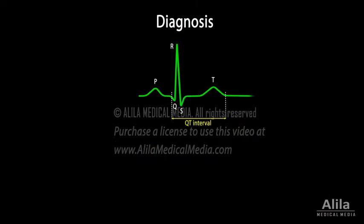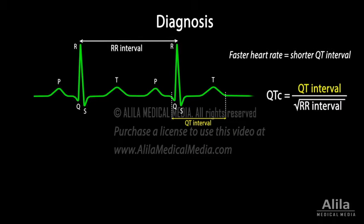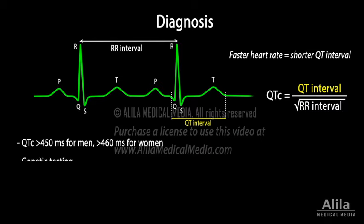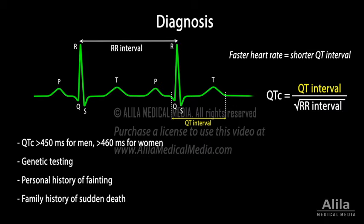For diagnosis, the patient's QT interval is measured. Because QT interval varies with heart rate, a corrected QT interval is calculated after measurement. Diagnosis, however, cannot rely on QT values alone. Asymptomatic patients can have longer than normal QTc and develop no arrhythmias, while patients with established Long QT syndrome may have normal QT intervals at rest. Diagnosis must therefore also include genetic testing, personal history of fainting, and family history of sudden death.